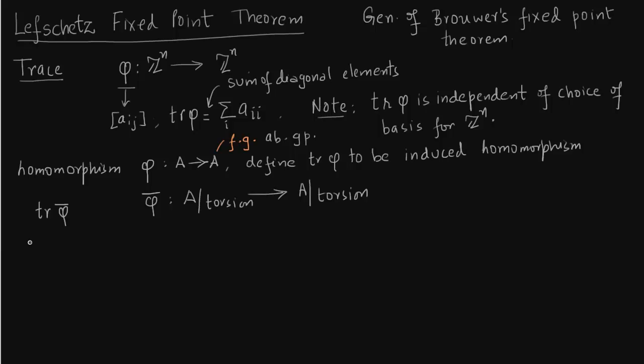And then you take the trace of this map phi bar. This trace of phi bar will be called the trace of phi. This will be important when we will talk about Lefschetz number of spaces like RP^n. Keep this in mind, that the trace is A modulo the torsion group and we will precisely use it in RP^n and even.